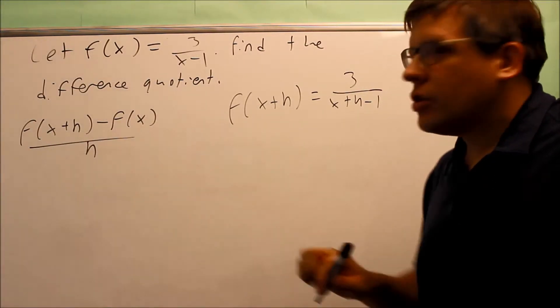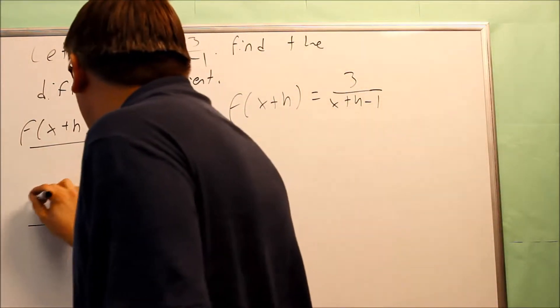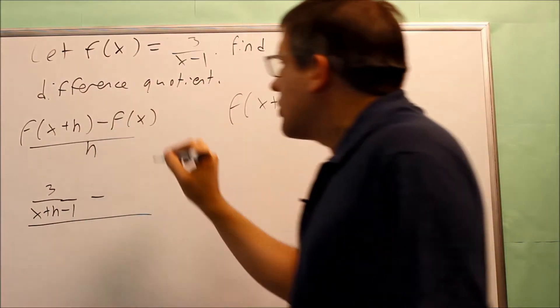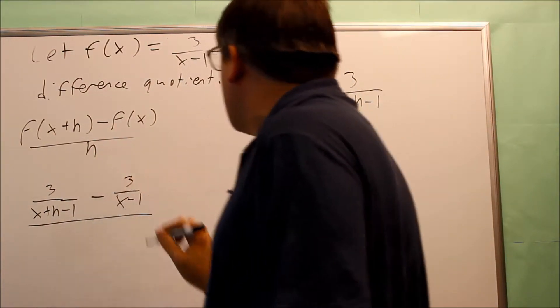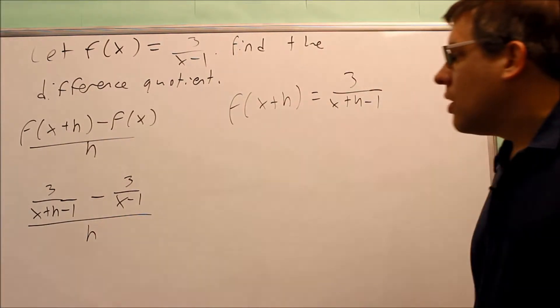And then now I'm going to put this into the difference quotient formula. So if I put that in there, I get 3 over x plus h minus 1, and then I have minus f of x, that's the original one that's given here, 3 over x minus 1. And then I have h on the bottom.